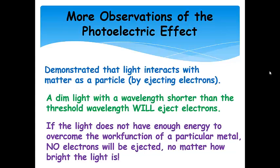Now, there are a few more observations that Einstein made with the photoelectric effect. He demonstrated that light interacts with matter as a particle by ejecting electrons. And in our calculations, we can assume that one photon ejects one electron. Now, he found that a dim light, a really dim light source with a wavelength shorter than the threshold wavelength, will eject electrons. So that means that if the wavelength is shorter than the threshold wavelength, that photon has more energy than the work function. So even if it's a really dim light, it will still eject electrons. Now, on the other hand, if the light doesn't have enough energy to overcome the work function of a particular metal, then it doesn't matter how bright we make that light, no electrons are ejected.